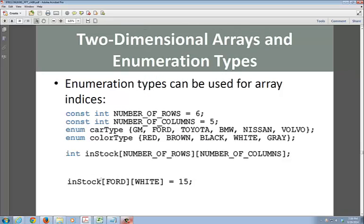Two-dimensional arrays - enumeration can be used for array indices. If you look at this, here's a constant: number of rows is six, number of columns is five. Here's an enum of GM, this is the card type, this is the color type. So if I pass in stock, I can have number of rows. Number of rows is going to be my row, and number of columns would be the column. So I would have six rows, five columns. And if I put in 15 equals, forward is one, white is one, zero, one, two, three. So one, three: row one, column three, put 15 in that. See how that worked?